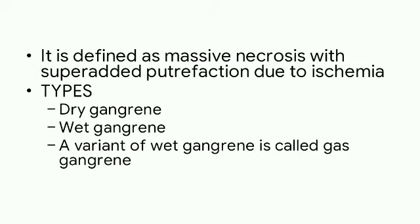Gangrene is defined as massive necrosis, meaning cell death, with superadded putrefaction, meaning decaying of the tissue, due to ischemia — loss of blood supply. The different types of gangrene are dry gangrene, wet gangrene, and a variant of wet gangrene called gas gangrene.